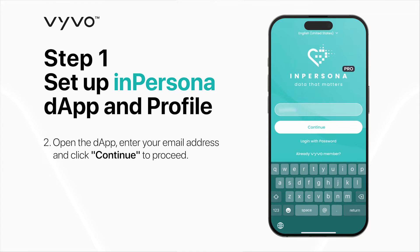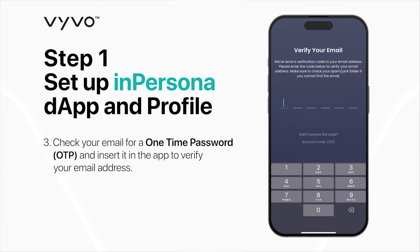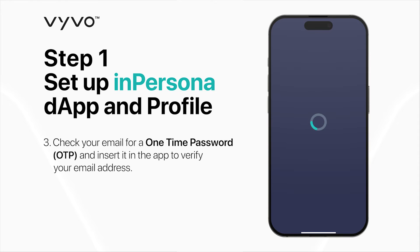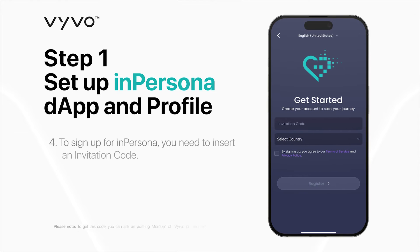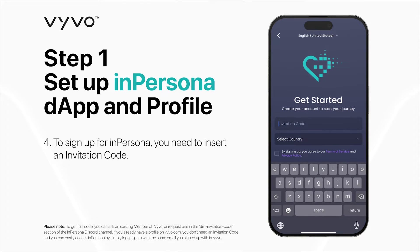Open the DAP. Enter your email address and click Continue to proceed. Check your email for a one-time password, and insert it in the app to verify your email address. To sign up for InPersona, you need to insert an invitation code.